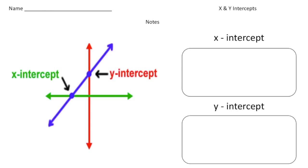Let's first talk about the x-intercept. The x-intercept is where the graph hits the x-axis. That is the x-intercept, and the important thing about the x-intercept is that the y-value is zero. Notice it doesn't go up or down — it's exactly on that line. So for the x-intercept, we're going to have a value for the x-value, but the y-value is going to be zero. It's always zero.